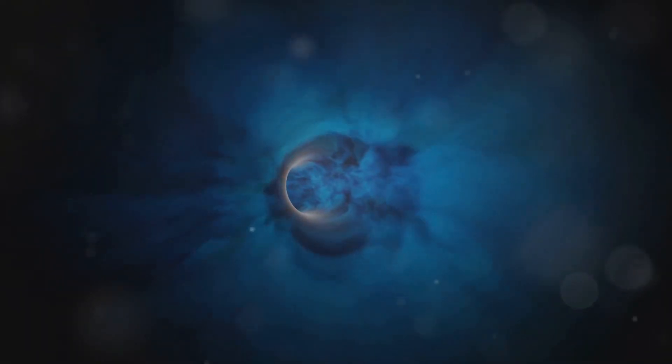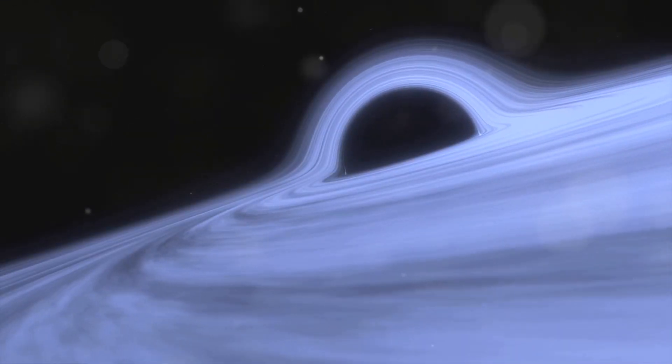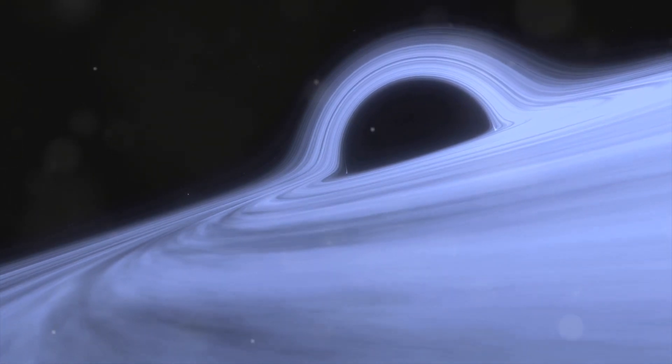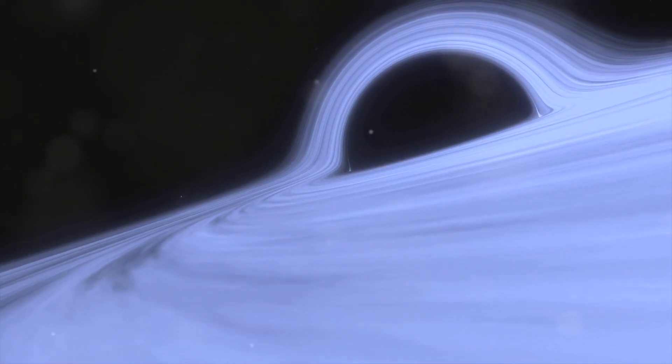Einstein suggested that time and space are not absolute. Instead, they're relative and intertwined in what we now call spacetime. According to Einstein, the presence of mass bends spacetime, and this curvature affects how objects move and how time passes.